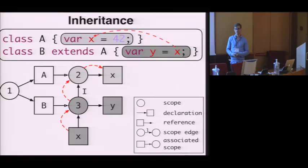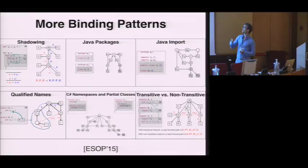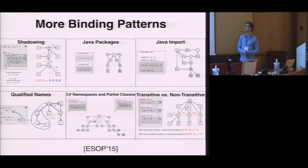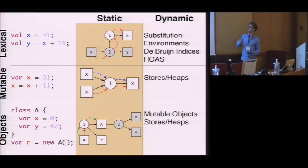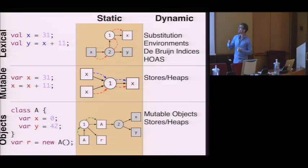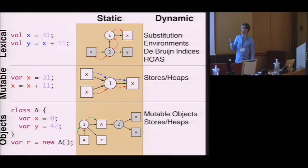Scope graphs scale to a wide range of different binding patterns, including shadowing, Java packages, imports, qualified names, C-sharp namespaces and partial classes, and transitive and non-transitive imports — all described in the ESOP paper. Returning to our bigger picture, we see how scope graphs provide a uniform way of describing all of these binding concepts for static semantics. The key difference from traditional approaches is that whereas traditional approaches associate names with types, scope graphs model name binding by associating named references with named declarations by constructing resolution paths. This doesn't preclude dealing with type checking, as we will see later.